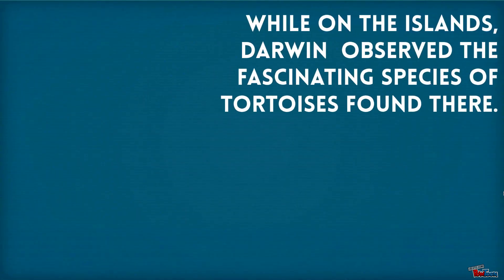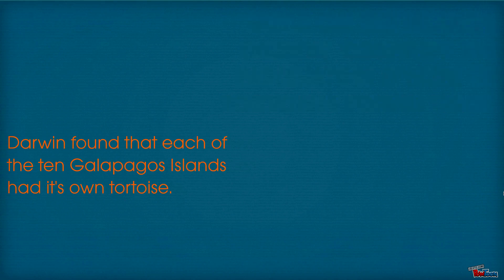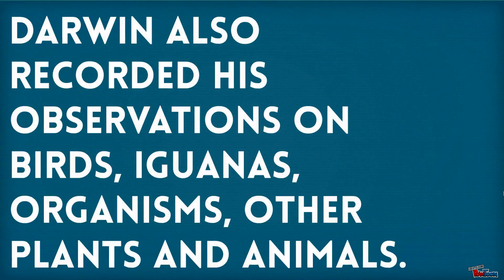While on the island, Darwin observed the fascinating species of tortoises found there. Darwin found that each of the ten Galapagos Islands had its own tortoise. Darwin also recorded his observations on birds, iguanas, organisms, and other plants and animals.